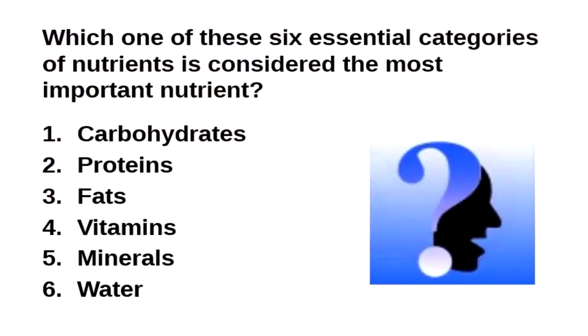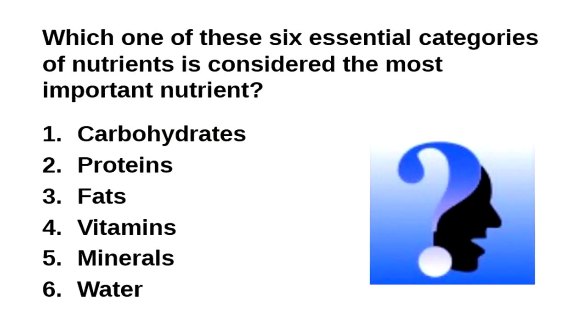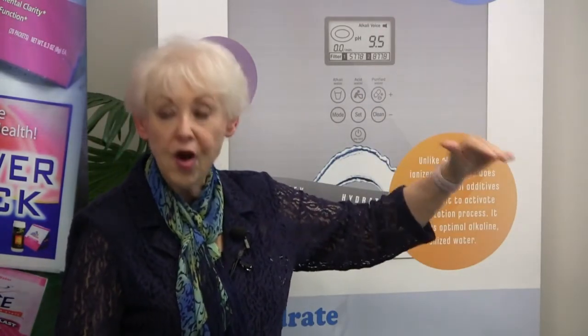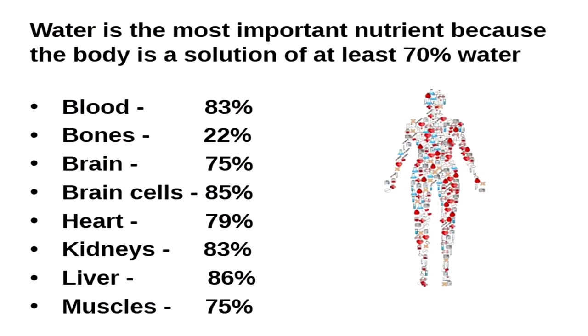Of these six essential categories, which is the most important? Water. We need all the rest, but you cannot live without water for very many days. You can go without any of the other nutrients for perhaps up to two weeks as long as you're getting water. The body is a solution of approximately 70% water. Blood is 83%, bones 22% — a lot of people are surprised that bones are nearly one-fourth water — and the brain at least 75%.